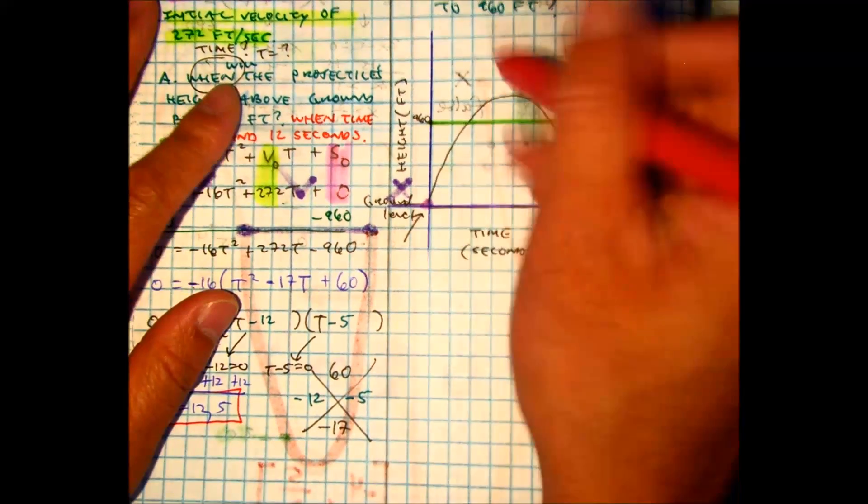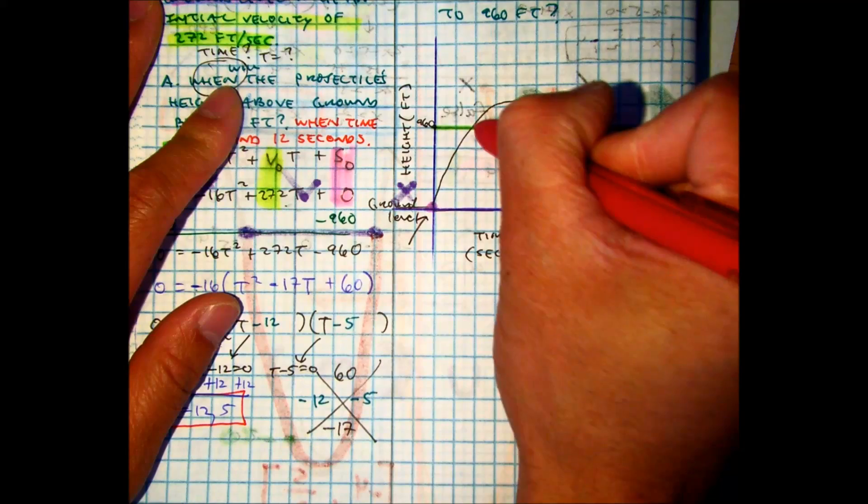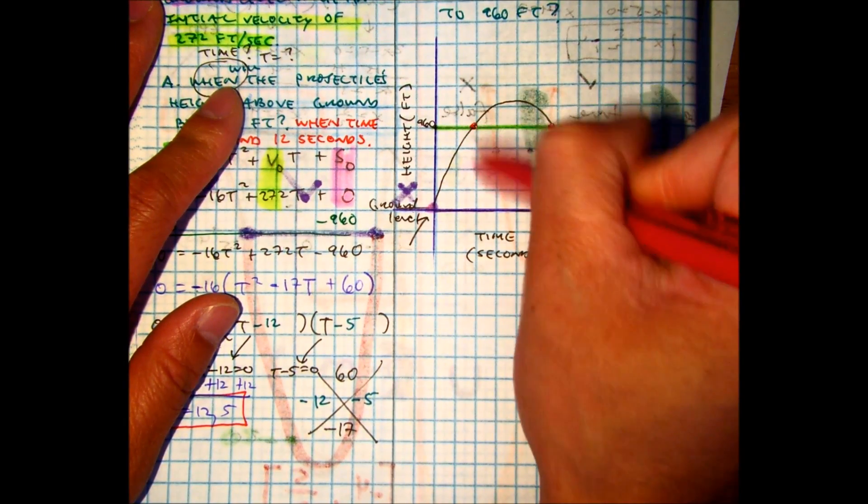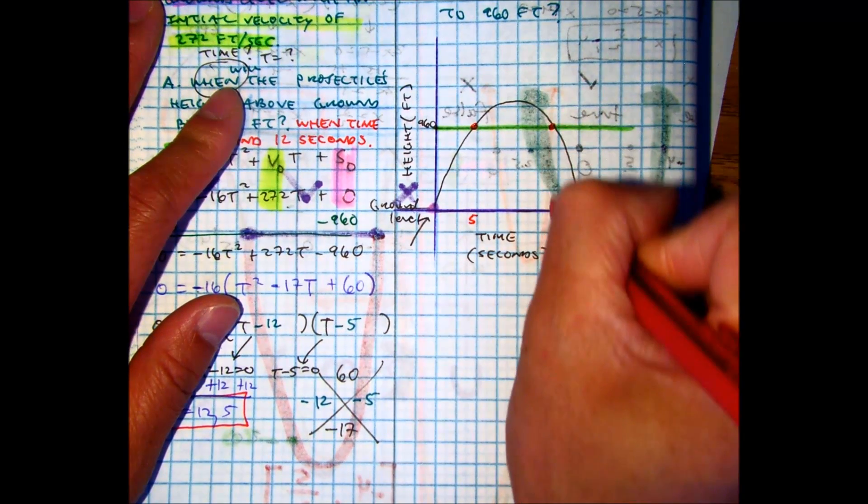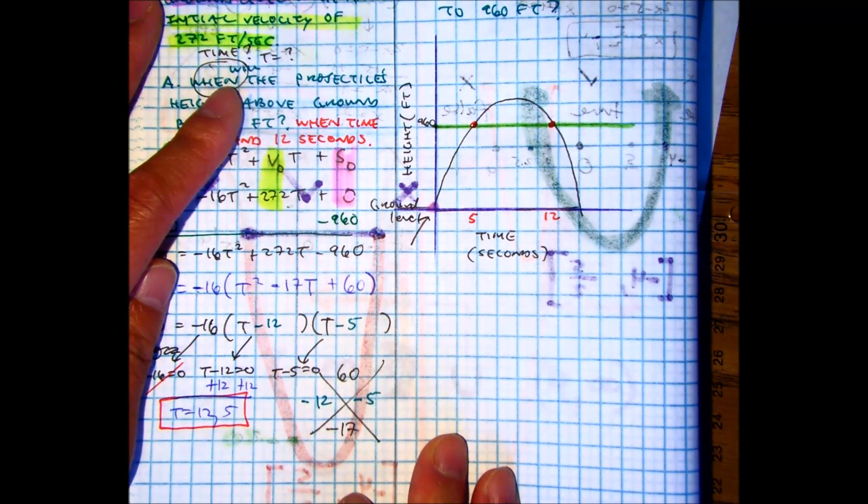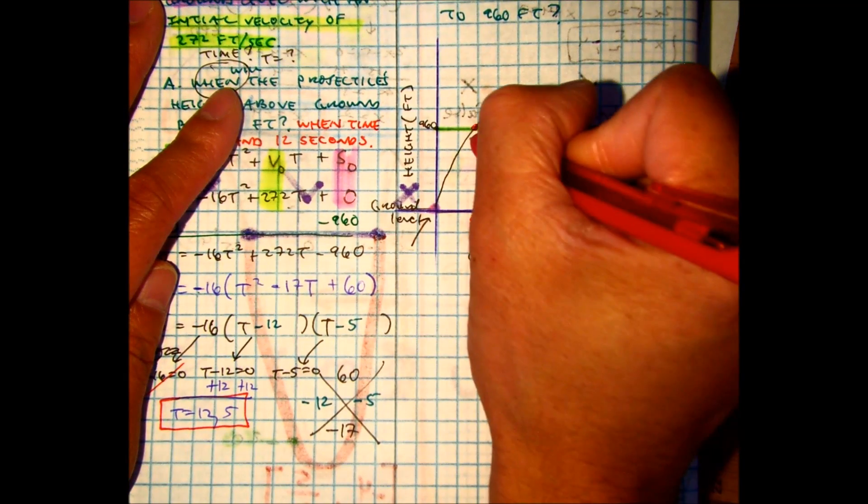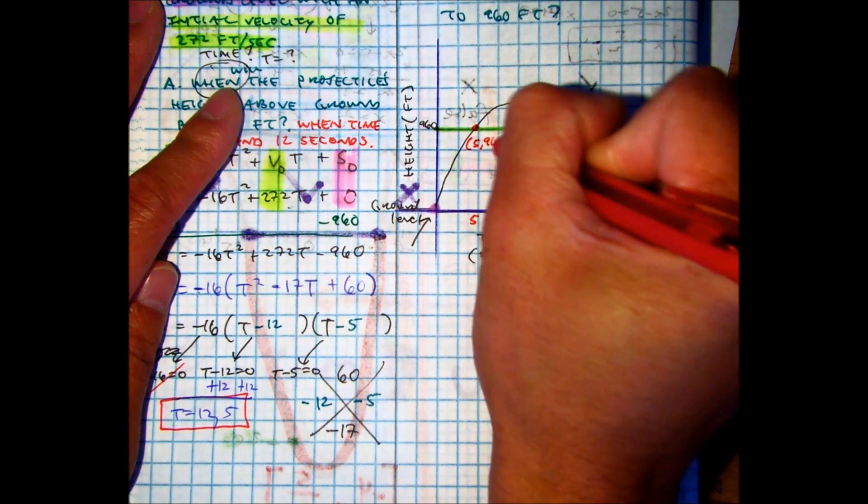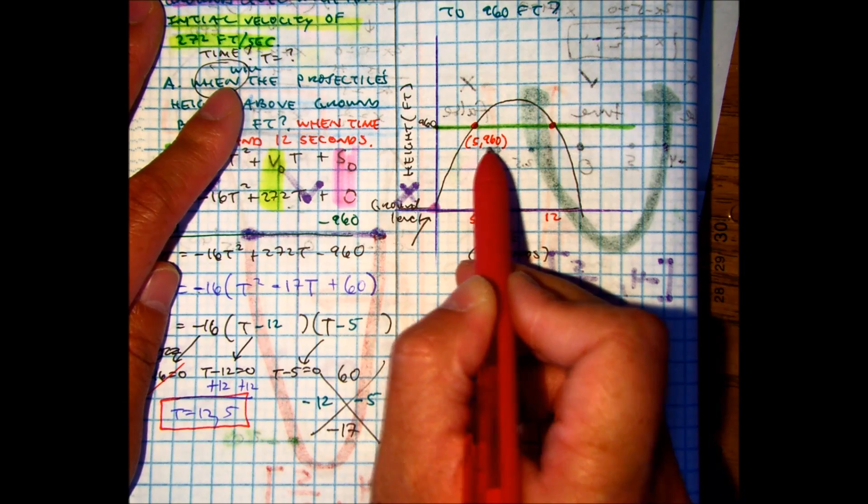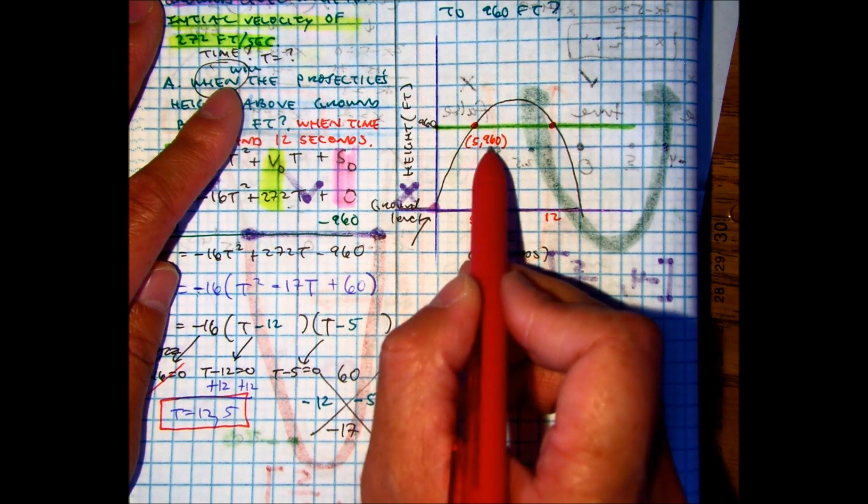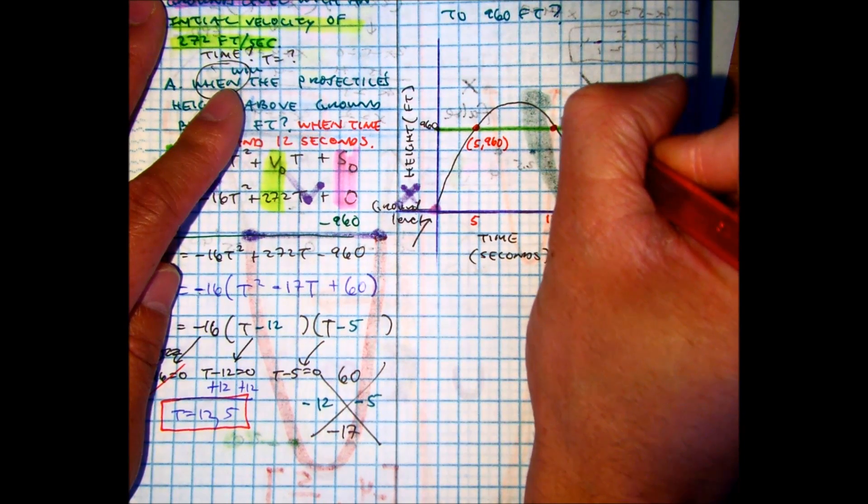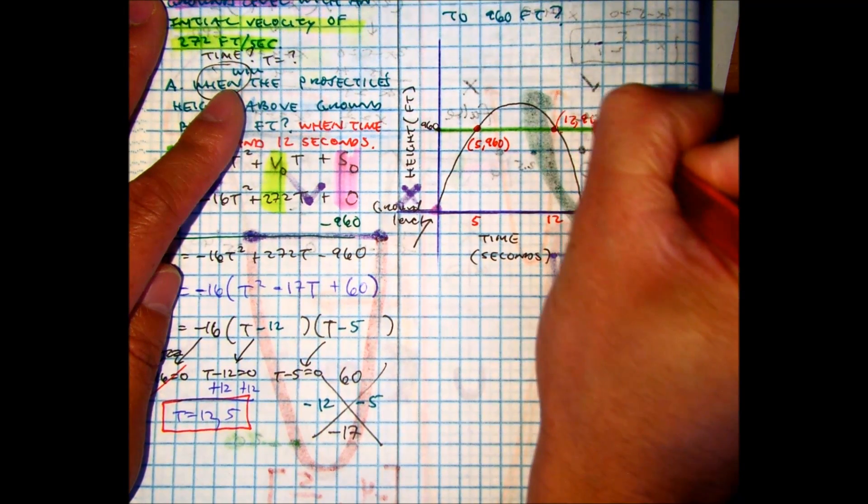What does this mean for us? It means that this location, not drawn to scale, our time here is 5 and here it is 12. So these order pairs are 5 comma 960, right? After 5 seconds, your ex's, that special notebook you guys shared, it's 960 feet in the air. And then at 12 seconds, it's also 960 feet in the air.